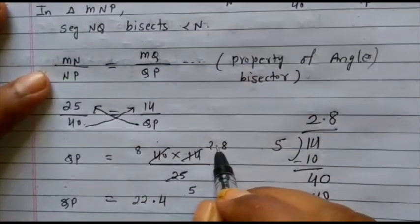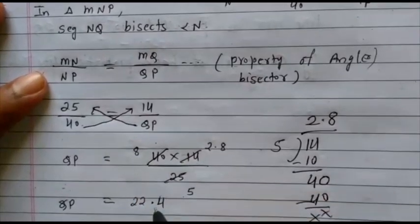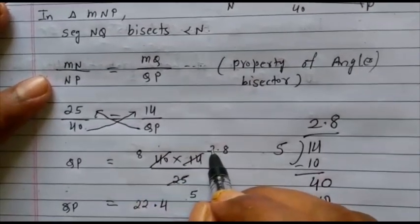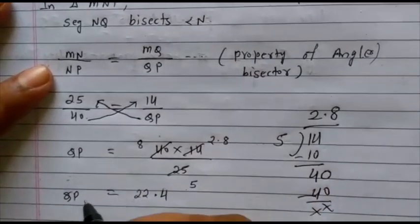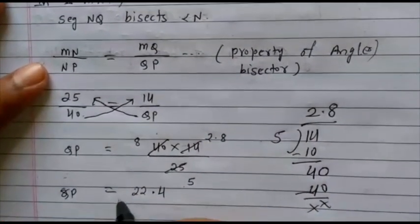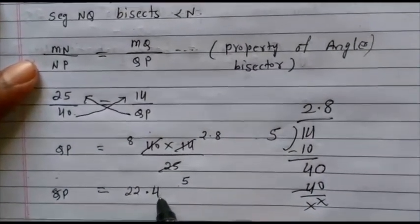Now, multiply 8 into 2.8. 8 into 8 is 64. 4, carry 6. 8 into 2 is 16 plus 6 equals 22. So, what is the answer? QP is equal to 22.4.